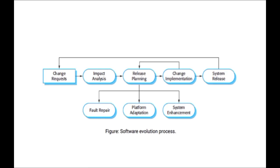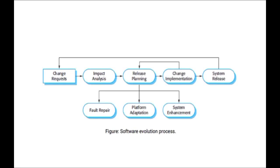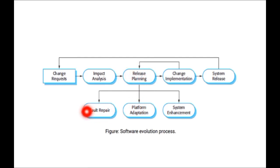This is the overall diagram of the software evolution process — it's simple, not complicated. First, the customer will request a change. Once the change is requested, you will perform impact analysis — analyzing what complications may arise to your existing software if you do the changes. Once the analysis is done and you are sure that the change is not going to affect your existing software too much, you can proceed with release planning.